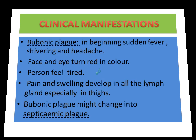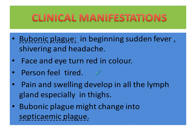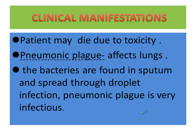In bubonic plague, in the beginning there is sudden fever, shivering, and headache. The face and eyes will turn red in color. The person will be feeling tired. Pain and swelling develop on the limb glands, especially in the thighs. Bubonic plague might change into septicemic plague, and the patient may die due to toxicity.